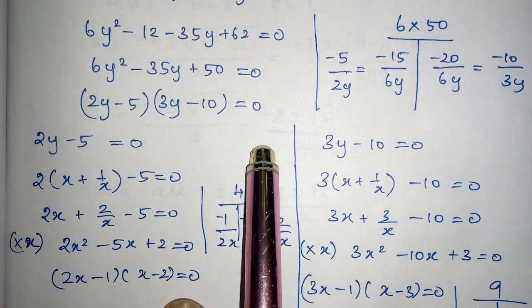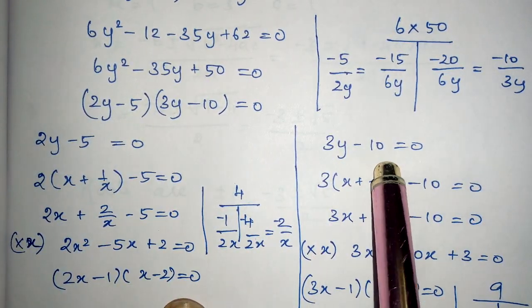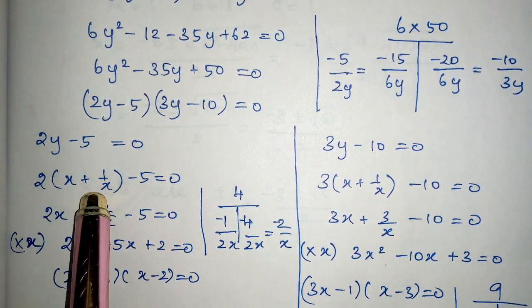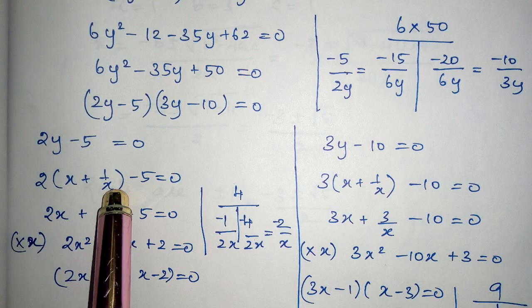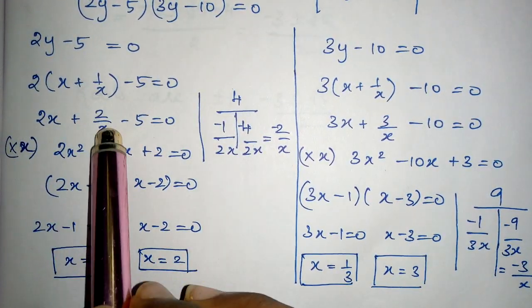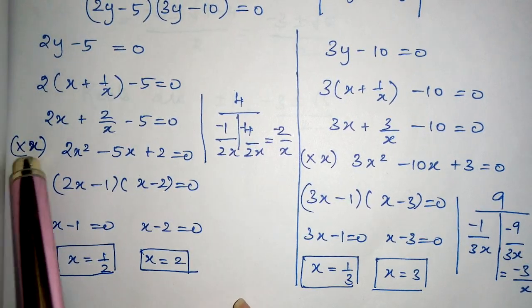On cancelling it is -10/3y and -5/2y. So (2y - 5)(3y - 10) = 0. You have got two sets of values: 2y - 5 = 0 and 3y - 10 = 0. Now as it is, replace y by x + 1/x.